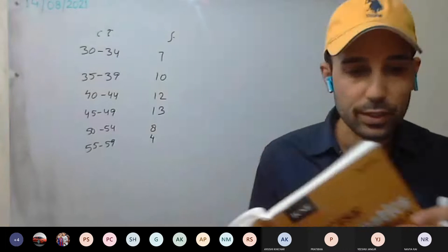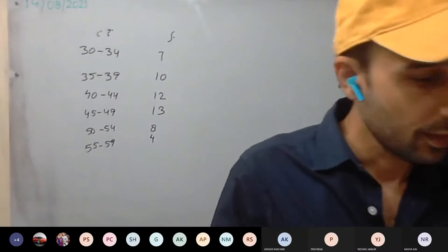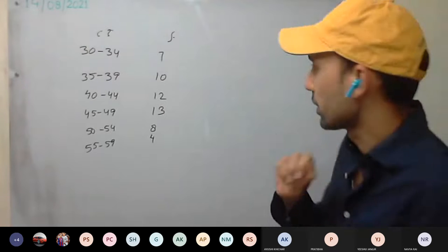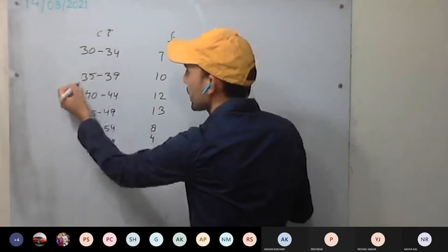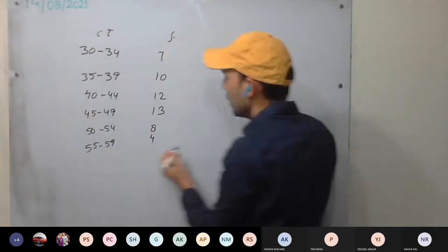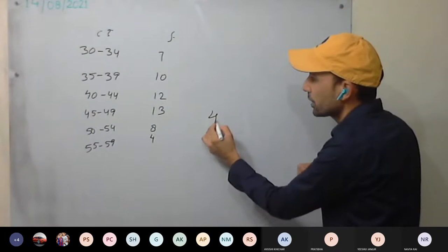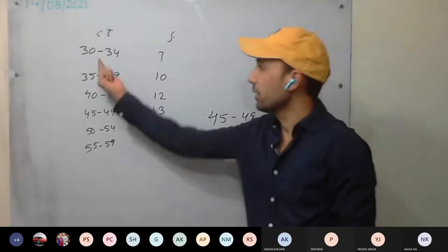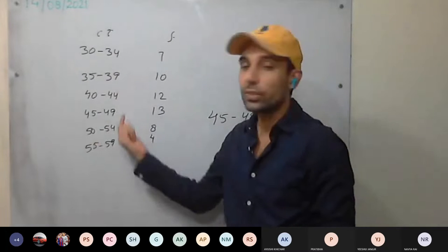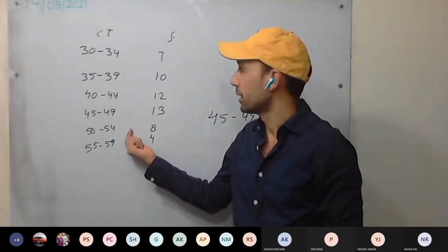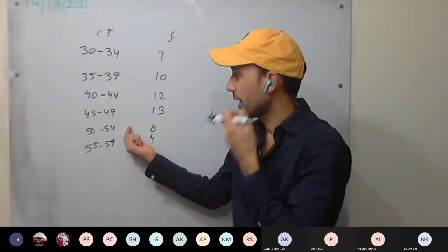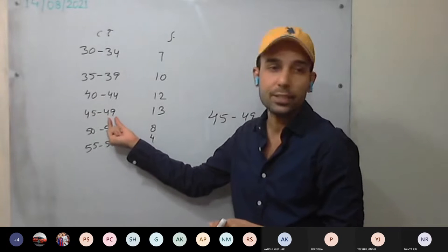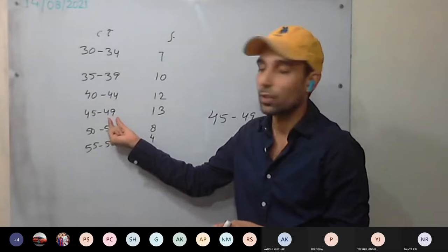The first question asks for the actual class limits of the fourth class. The fourth class is 45 to 49. These class intervals are in inclusive form — the lower limit is included and the upper limit is also included.